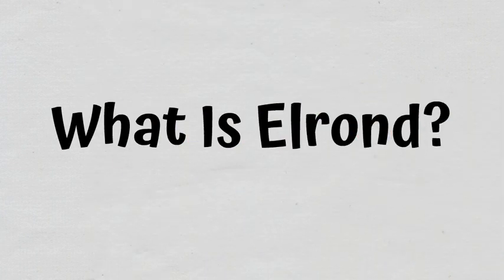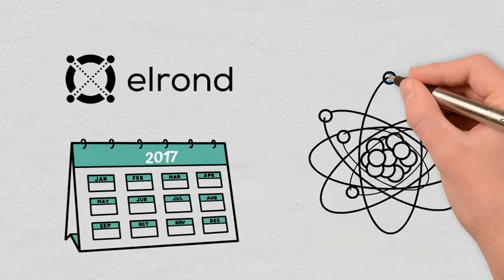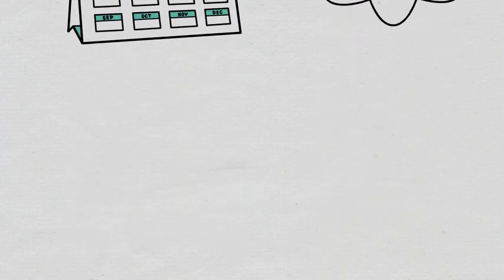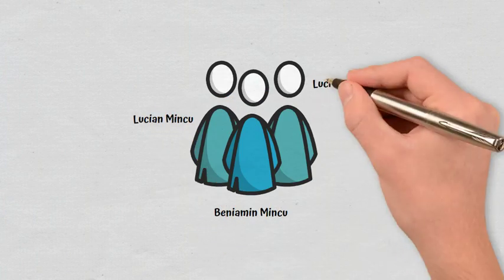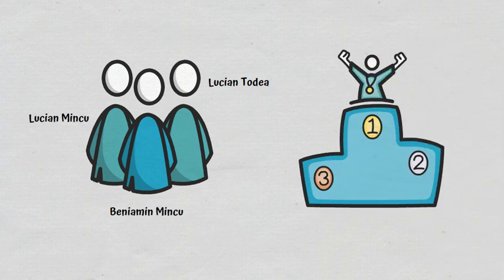What is Elrond? Elrond was founded in 2017, being an ecosystem built on its own blockchain. The founders, Benyamin Minko, Lucian Minko, and Lucian Toda, started with the vision to make Elrond the leader of the DeFi universe.